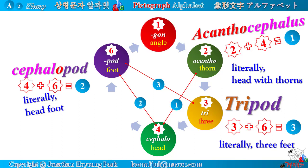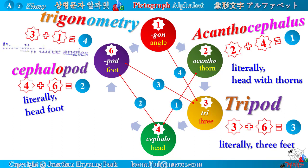Star number one — Latin root gon, meaning angle. Star number three and star number one make the word trigonometry, which literally means 'three angles.' Trigonometry is the branch of mathematics dealing with the relations of the sides and angles of triangles, and with the relevant functions of any angles.